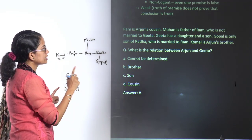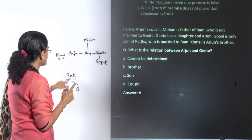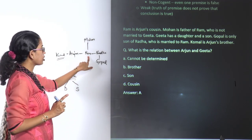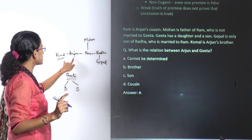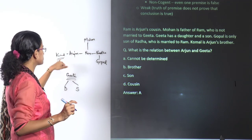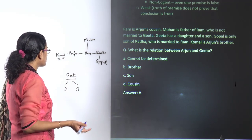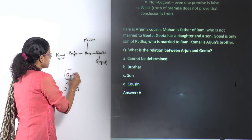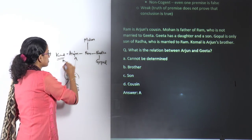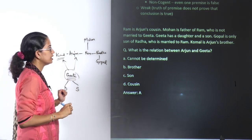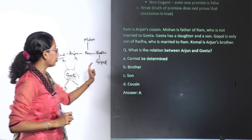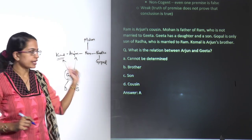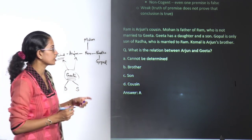What is the relation between Arjun and Gita? Gita is not the wife of Ram, but there are two brothers still left — Komal and Arjun. Gita can be the wife of Arjun or the wife of Komal. Therefore, this cannot be determined — that would be the correct answer for this question.